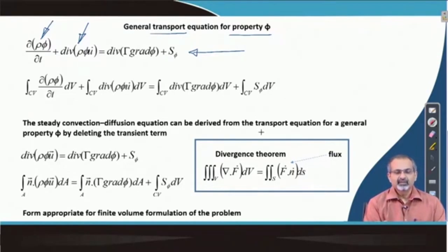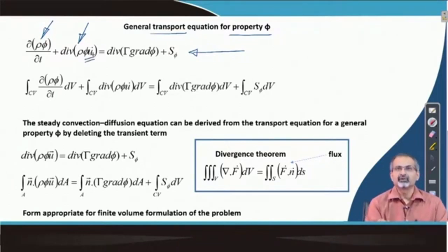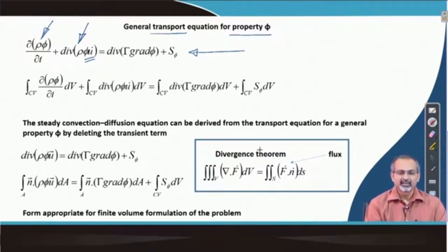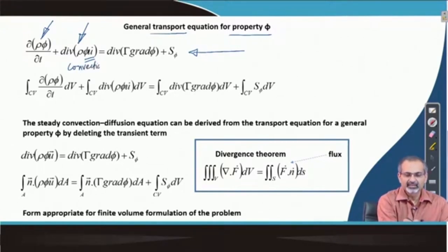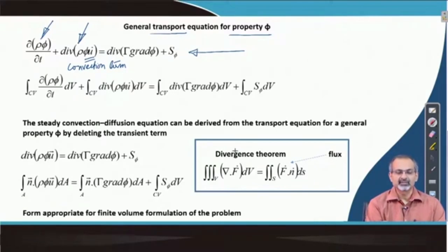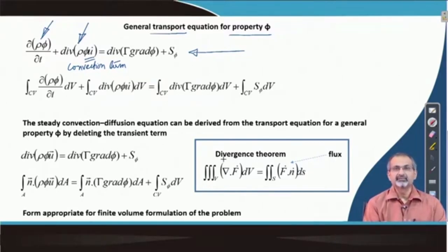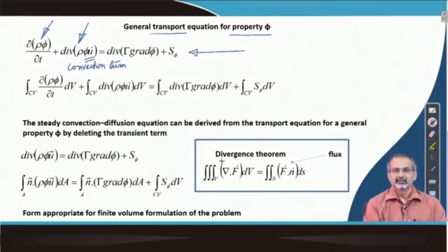The second term shows up as a divergence of an expression which contains density, the property, as well as the local flow velocity. Because the local flow velocity is involved in transporting the property phi, this is often called the convection term or convective derivatives, since it is a divergence term. Therefore, there would be spatial derivatives involved of the argument rho phi u. Remember, u is essentially a vector.